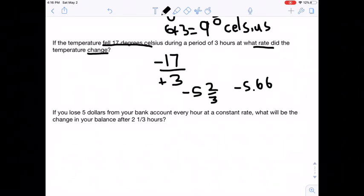So the rate of change is, it changes by negative 5.66 degrees Celsius every hour, Celsius per hour.